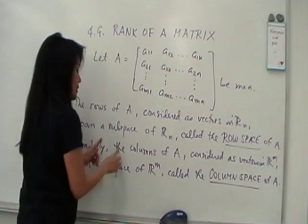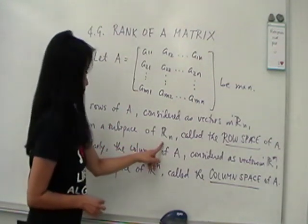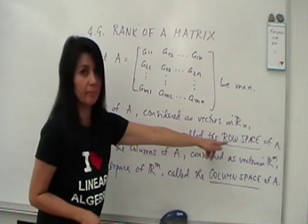So these vectors will span a subspace of R sub n, and that subspace is what we call the row space of A.